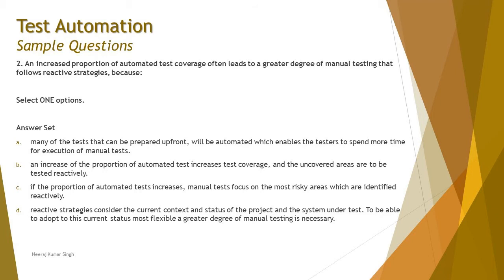Option A: many of the tests that can be prepared upfront will be automated, which enables the tester to spend more time on execution of manual tests. This statement says 'prepared upfront,' which aligns with the syllabus statement that an increased proportion of automated test coverage leads to more manual testing, since many tests prepared upfront will be automated. This is the best option.